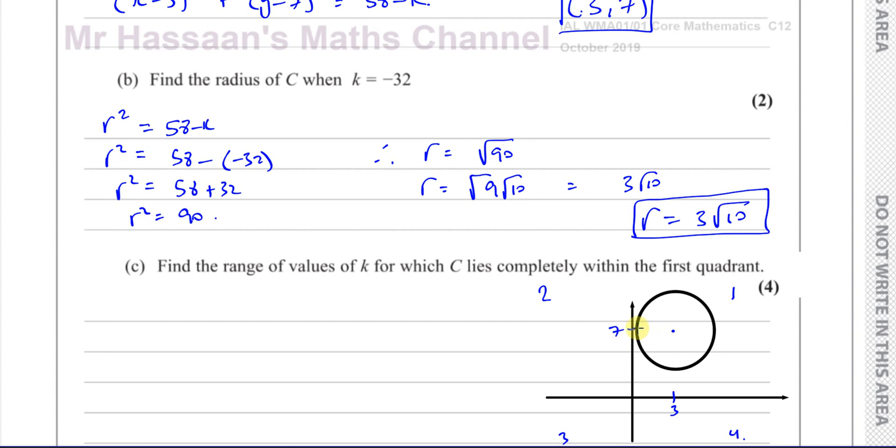It's going to touch the y-axis before it touches the x-axis because the distance to it is 3. So basically, for this to be within the first quadrant, the radius has to be less than 3. The radius must be less than 3, otherwise if it's 3 or more, it will touch the y-axis and go out of range, out of the first quadrant.